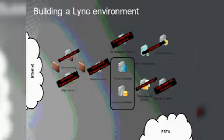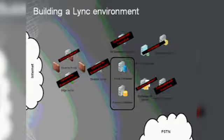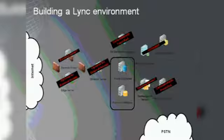Now that looks like a lot of server roles. Let me reduce the number a little. The monitoring server and archiving server can be co-located — you don't need two instances. The AV conferencing server can be co-located with the front-end server and is only required if you have more than 10,000 users in your pool. Maybe you already have Exchange UM in your environment — you might just need to resize or reuse existing servers. The mediation server can be co-located with the front-end server, so no need for an additional box.